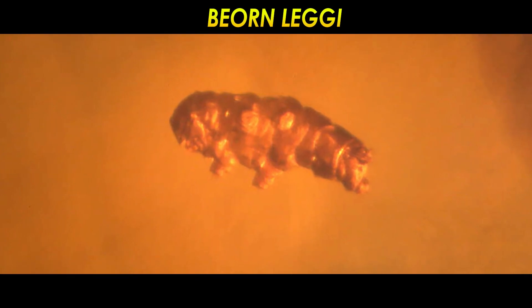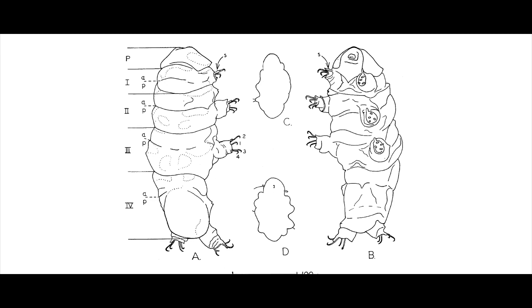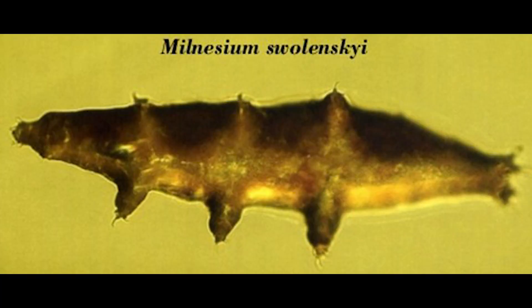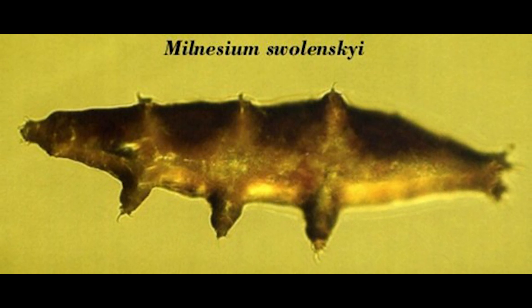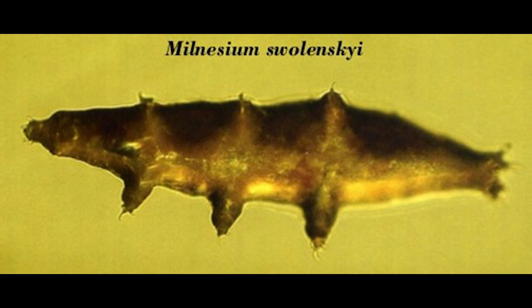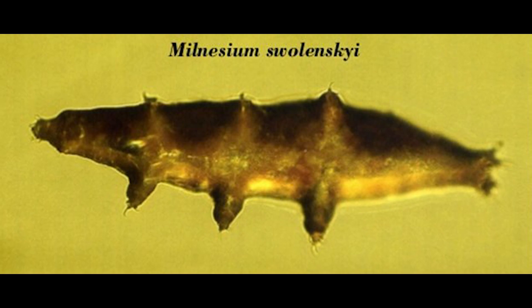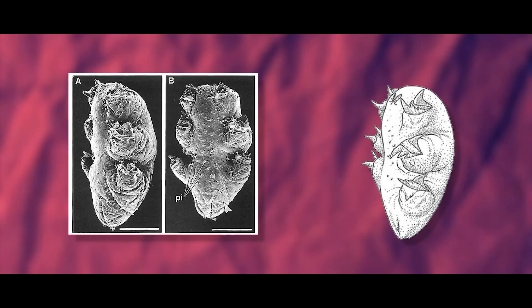Beorn leggi is a fossil tardigrade preserved in 78 million year old amber from Manitoba. Another individual tardigrade was preserved in the same chunk of amber but was too shriveled to identify. Nearly 40 years after this specimen came another named Milnesium swolenskii from 90 million year old New Jersey amber, making it about 14 million years older than the other tardigrade. The next was a set of four phosphatized specimens from mid-Cambrian period rocks of Siberia. These tardigrades are very old and very different from any living tardigrades.